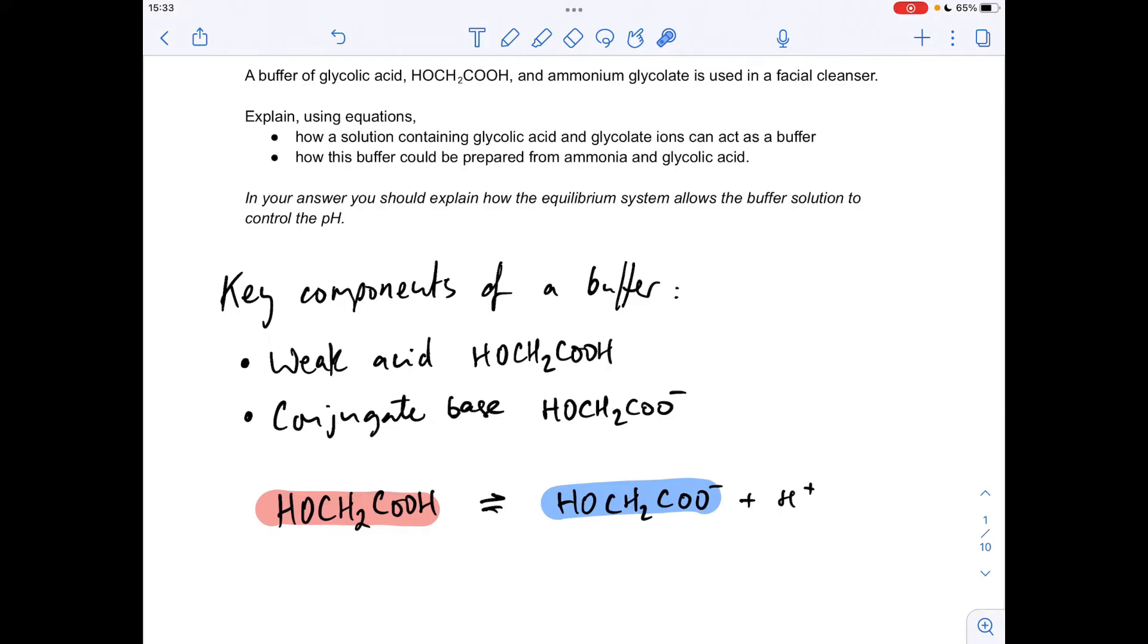If you add a small amount of alkali, so a small amount of hydroxide ions, that's going to lower the H+ concentration. The reservoir of weak acid will dissociate more and replace the lost H+ ions. So the upshot of both of those processes is that the pH remains roughly the same.